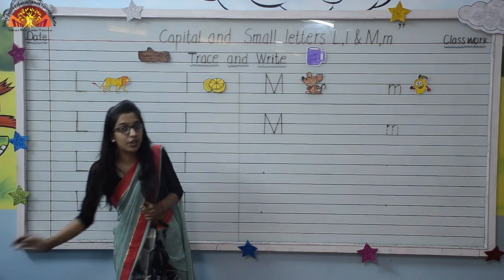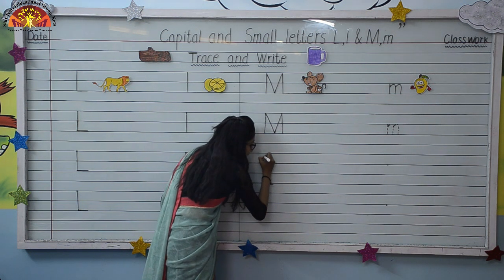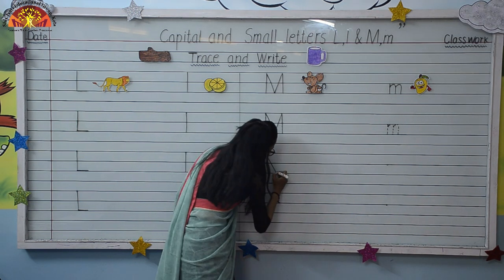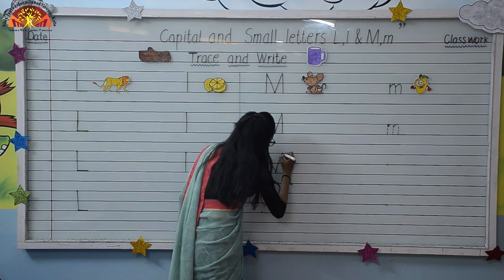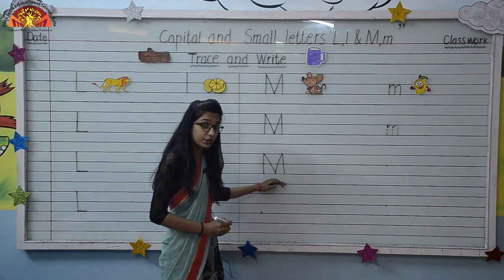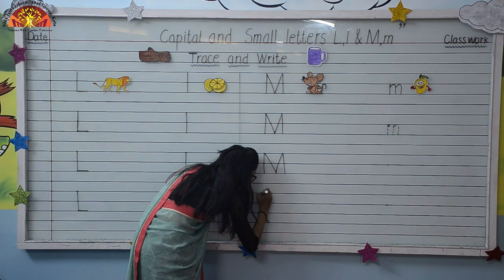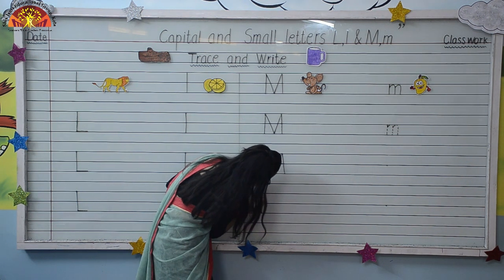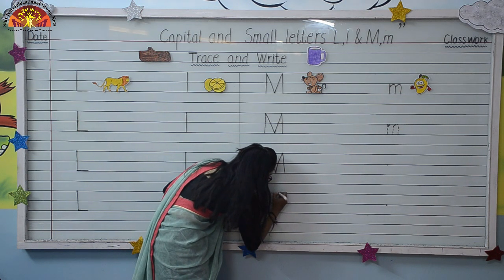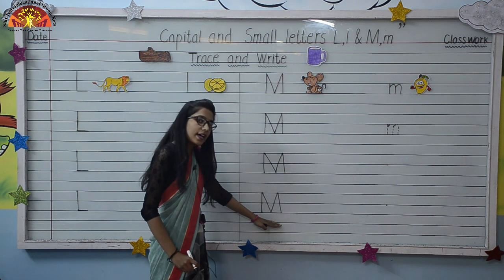Now let's write capital M on dot. Start from here — make a standing line, up. Then down and make a slanting line. Touch it. Up, make a slanting line. And down, make a standing line. Capital letter M. Again: standing line, up, slanting line, down, up, slanting line, standing line, down. Capital letter M.